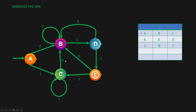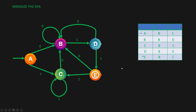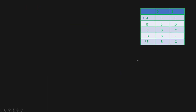What about state D? You are in state D, you get input 0, you go to state B. And you get input 1, you go to state E. What about state E? You are in state E — that is the final state. You get input 0, you go to state B. And in state E, you get input 1, you go to state C. So this is our transition table for our DFA.